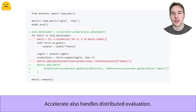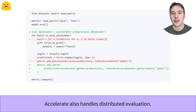Accelerate also handles distributed evaluation. You can still use the classic evaluation loop, such as the one we saw in the training loop video, in which case all processes will perform the full evaluation. To use distributed evaluation, you just have to adapt your evaluation loop like this: pass along the evaluation data loader to the Accelerator.prepare method, then dismiss the line that places the batch on the proper device. And just before passing your predictions and labels to your metric, use Accelerator.gather to gather the predictions and labels from each process.